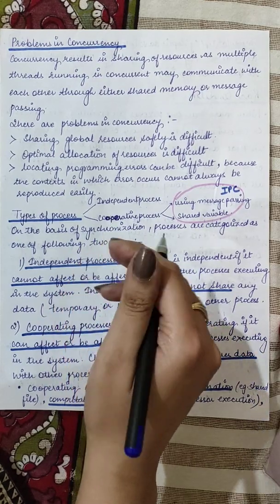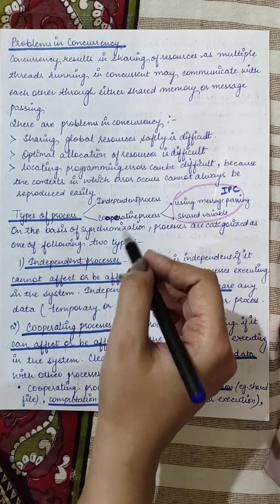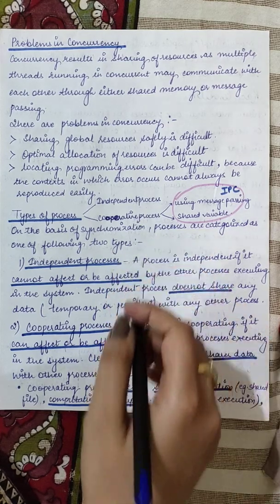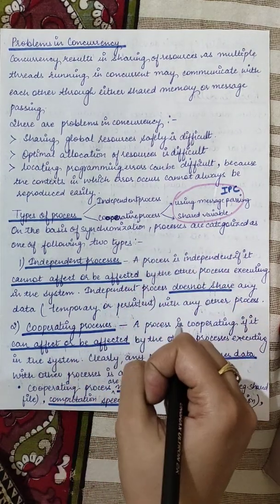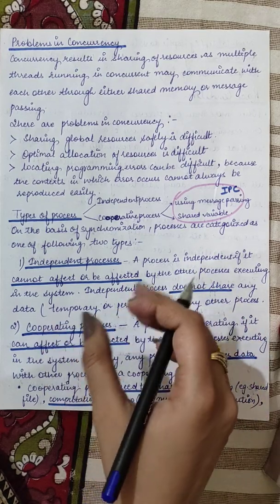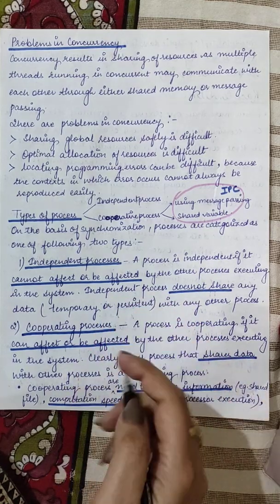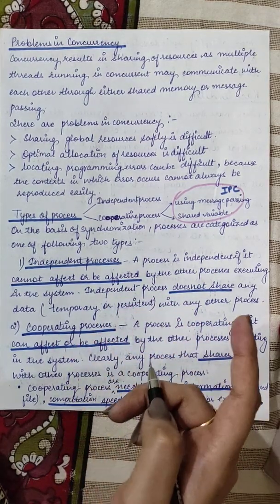Usse pahle hame dekh lete hai types of processes. Jab hum concurrency ki baat karte hai to humare paas do tarah ke processes ho sakti hai - independent ya cooperative processes. Jo independent processes hain woh processes na to jo kisi dusre process ko affect karte hai na hi affect hote hain. That means woh dusre process kuch bhi resources share nahi karenge.